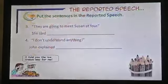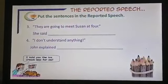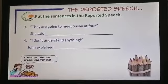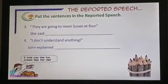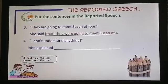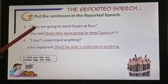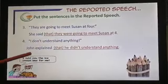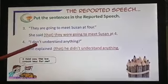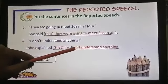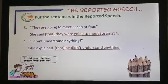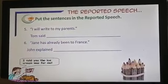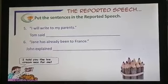Let's practice. Put these sentences into reported speech: 'They are going to meet Susan at four.' 'She said I don't understand anything.' 'John explained...' Try to do it yourself by pausing the video. Here are the answers: she said that they were going to meet Susan at four. 'I don't understand anything' — she said that she didn't understand anything. Additional sentences: 'I will write to my parents.' 'Jane has already been to France.' Pause the video, answer, then check your answers.